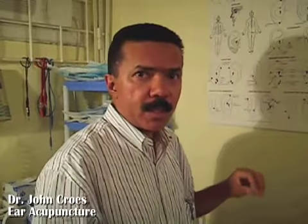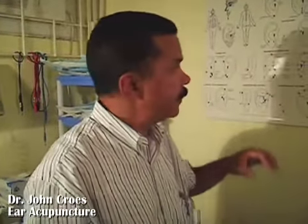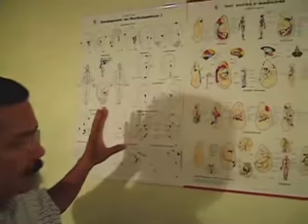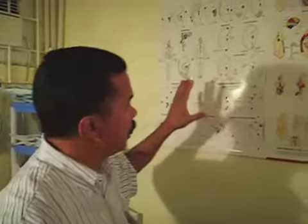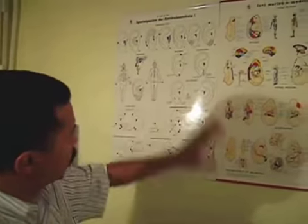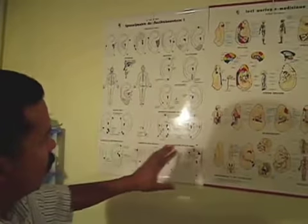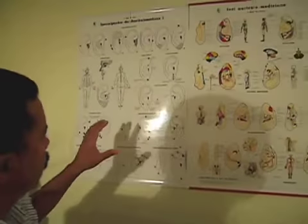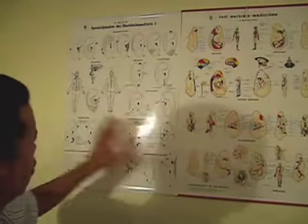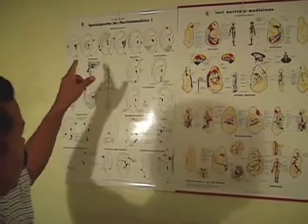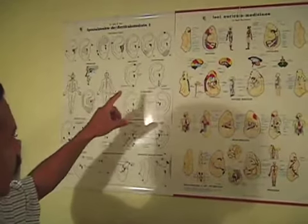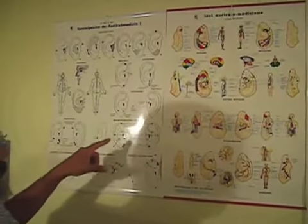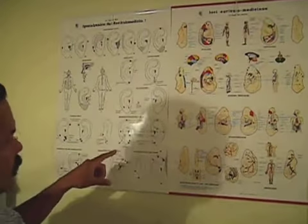This is Dr. John Bruce. I'm going to use the heel acupuncture machine. This is a chart that we usually use when we have to treat some problems in the patient's body. On this side you can see, for example, the points where we can stimulate the production of vitamins in the body of the patient.